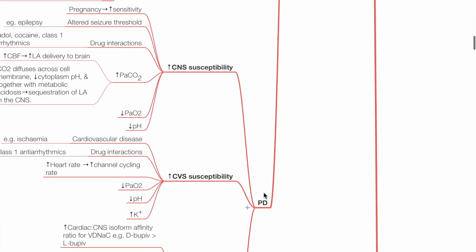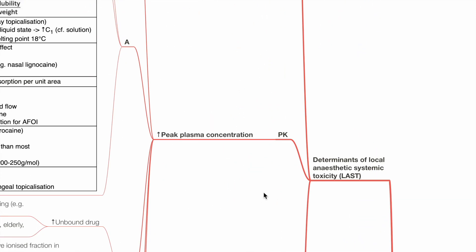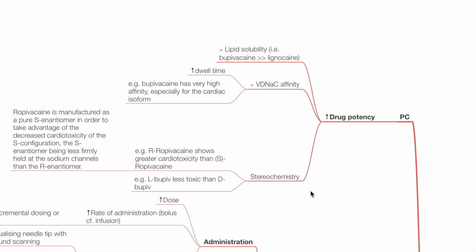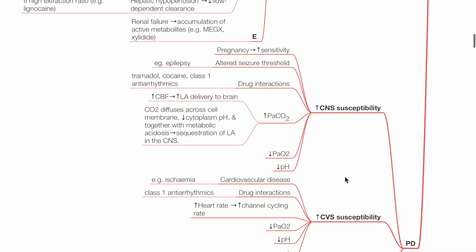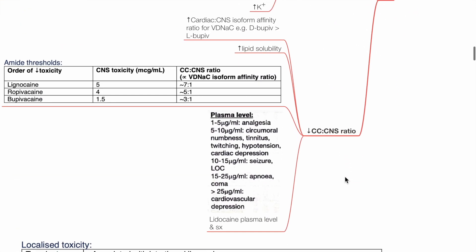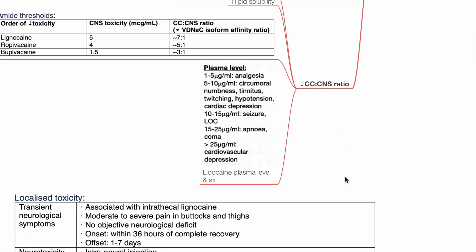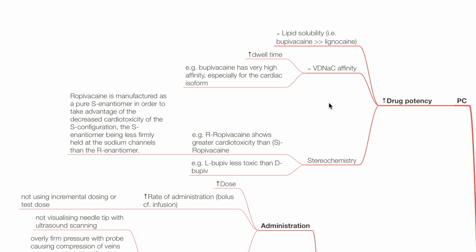Determinants of local anaesthetic systemic toxicity: factors that increase drug potency, increase peak plasma LA concentration, increase CNS susceptibility, CVS susceptibility, and reduce the CC:CNS ratio all increase the risk of LAST. Factors that increase drug potency include high lipid solubility (bupivacaine more lipid soluble than lidocaine), high voltage-dependent sodium channel affinity (bupivacaine more than lidocaine), and stereochemistry — for example, R-ropivacaine is more cardiotoxic than S-ropivacaine, and levobupivacaine is less toxic than dextrobupivacaine.